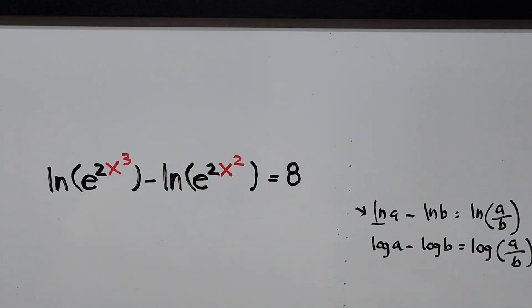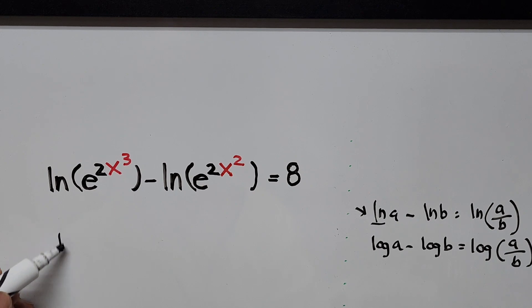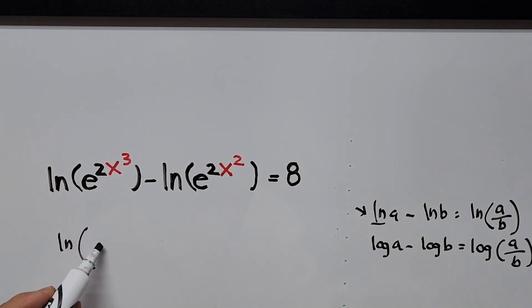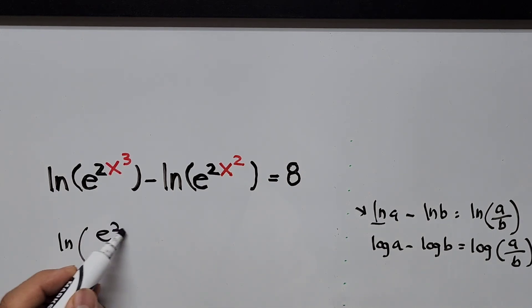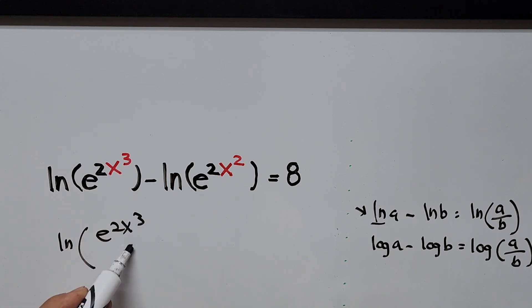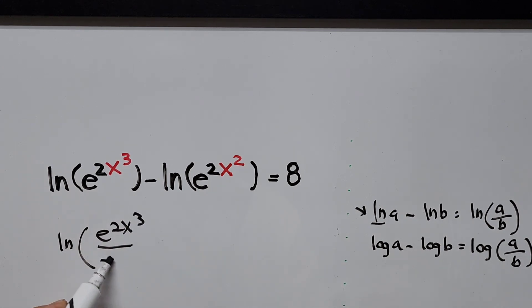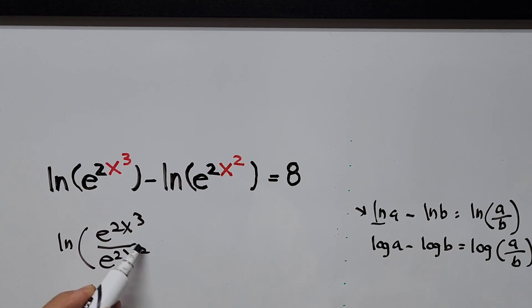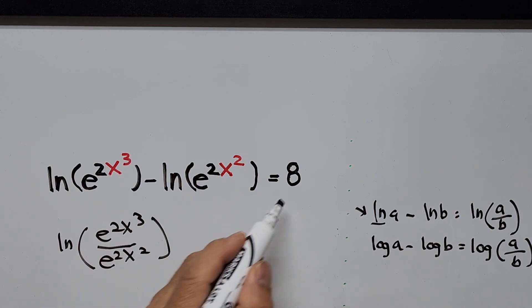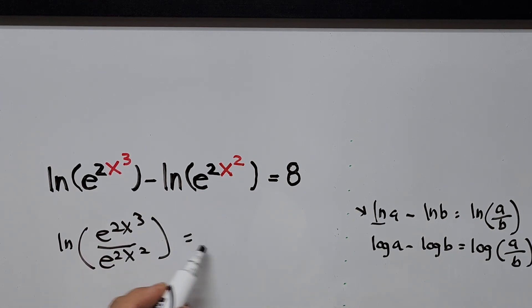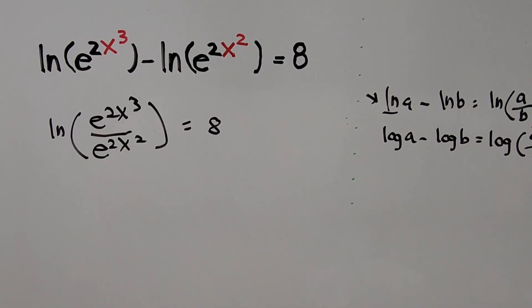Since we're working with natural logarithm, we'll use this quotient formula. Going back to our equation, it can now be written as: natural logarithm of e to the power of 2x cubed divided by e to the power of 2x squared, is equal to 8.